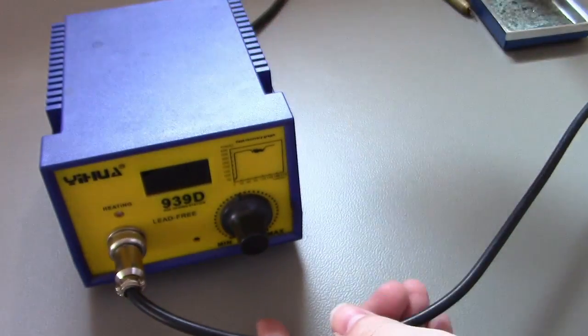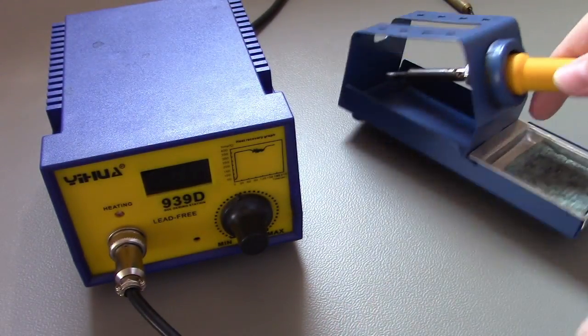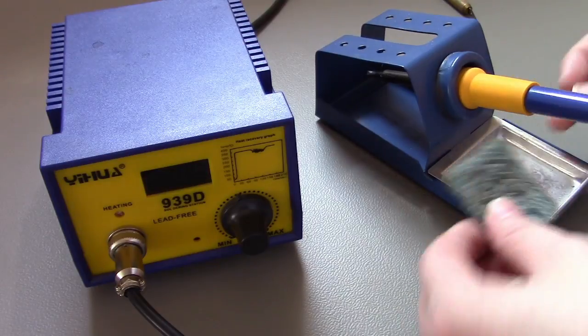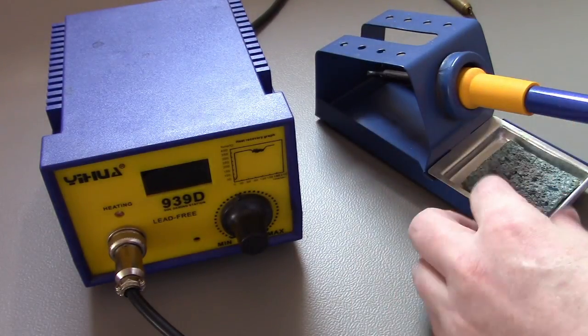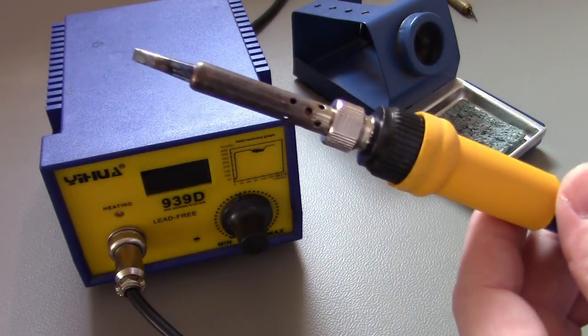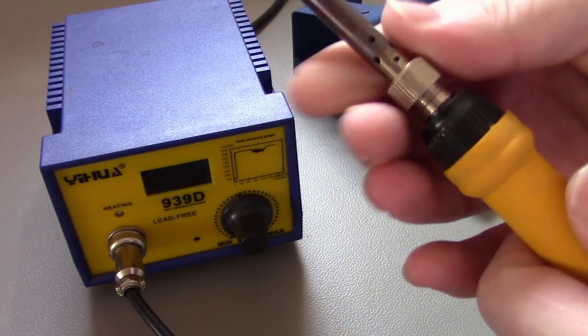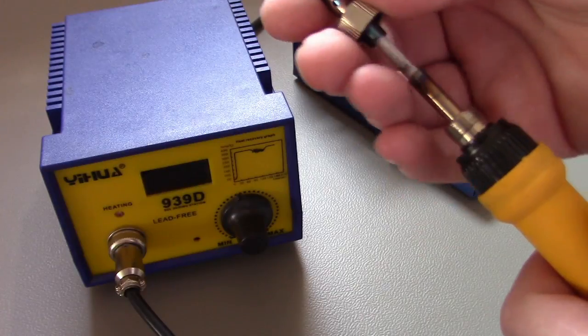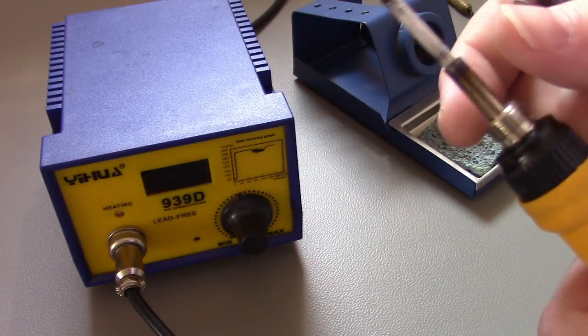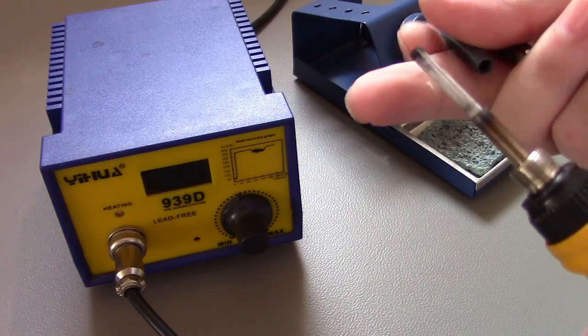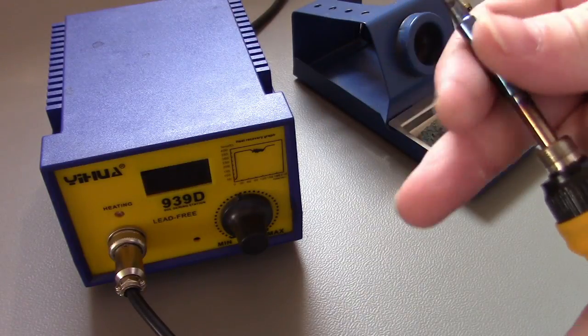And then the iron itself, you get this holder, plain metal holder, little spongy bit and that's the iron itself. You can see it's obviously been used. You can unscrew it and I think you can use normal Hakko tips, replacement tips for these and you can actually take these elements out and replace them as well if need be.